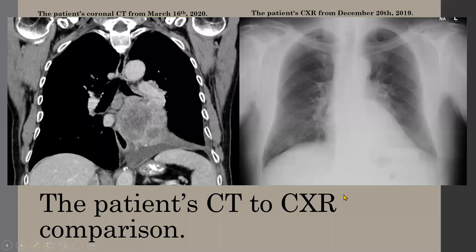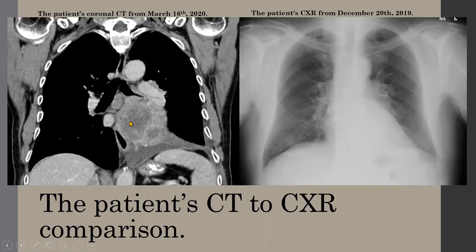Comparing the CT to the chest x-ray, the opacity behind the heart is not just the mass but also the atelectasis itself. The triangular shape seen on the CXR is due to the atelectasis. Together, the opacity represents both the mass and the atelectasis. The more pronounced left hilum is due to tumor growth extending past the wall of the left pulmonary artery into the mediastinum in the left hilar region.